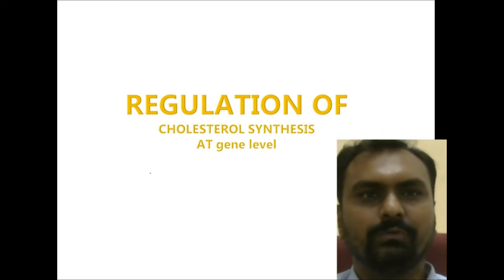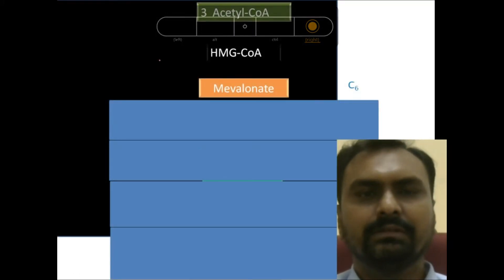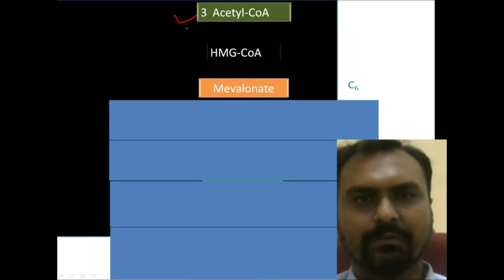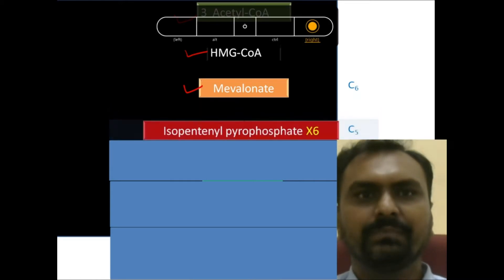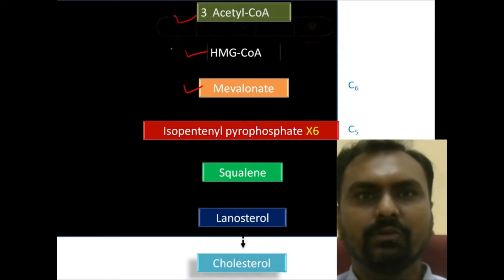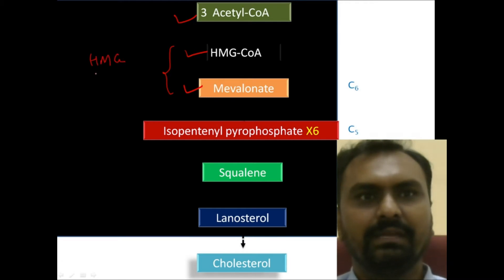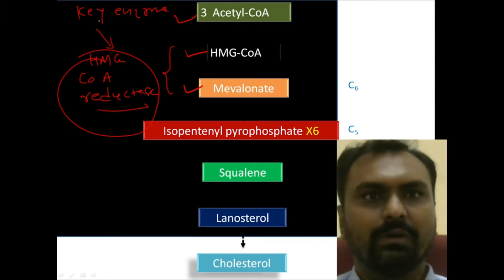Hello all. In this video I am going to discuss about the regulation of cholesterol synthesis at the gene level. During the synthesis of cholesterol, Acetyl-CoA is a precursor molecule. From Acetyl-CoA, HMG-CoA is formed; from HMG-CoA comes mevalonate, then isopentenyl pyrophosphate, squalene, lanosterol, and cholesterol. The conversion of HMG-CoA to mevalonate is mediated by HMG-CoA reductase enzyme, which is the key enzyme of cholesterol biosynthesis.